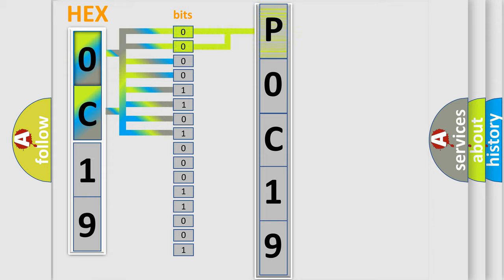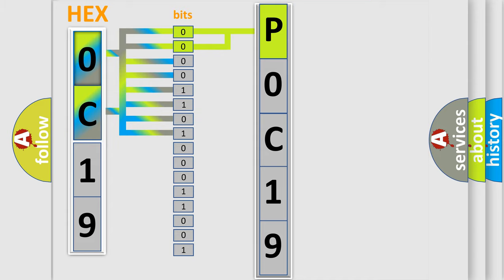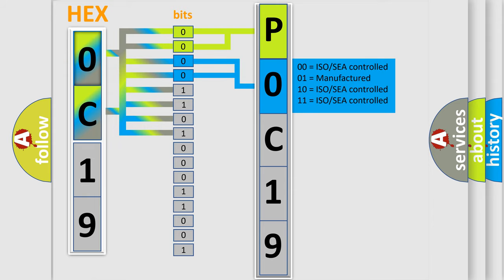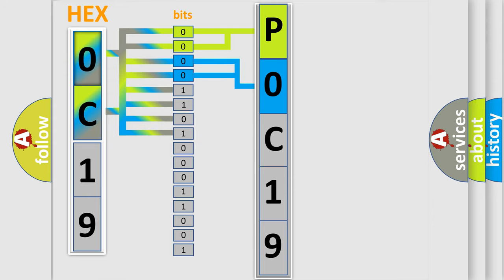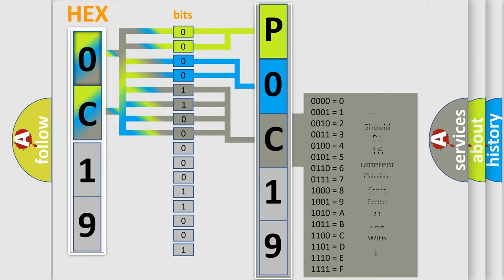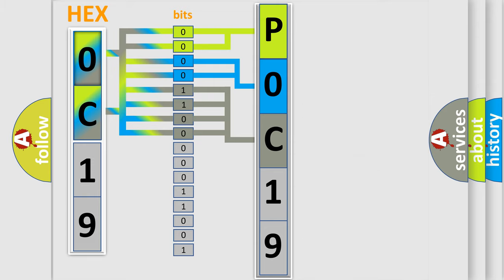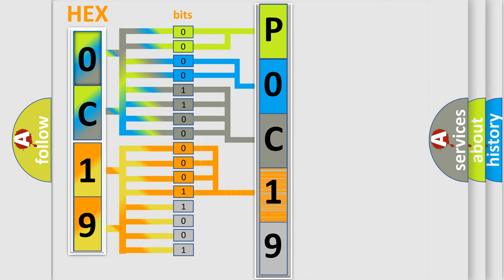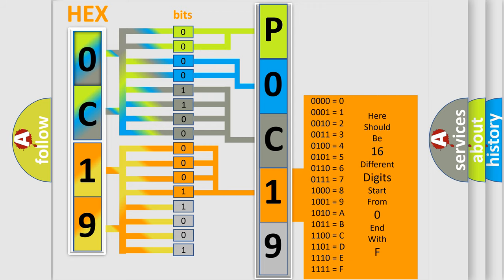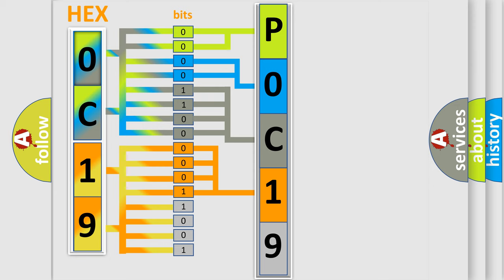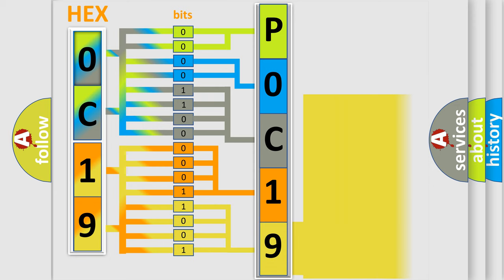By combining the first two bits, the basic character of the error code is expressed. The next two bits again determine the second character. The last bit styles of the first byte define the third character of the code. The second byte is composed of a combination of eight bits. The first four bits determine the fourth character of the code, and the combination of the last four bits defines the fifth character. A single byte conceals 256 possible combinations.